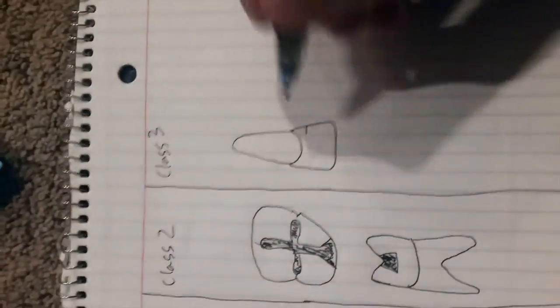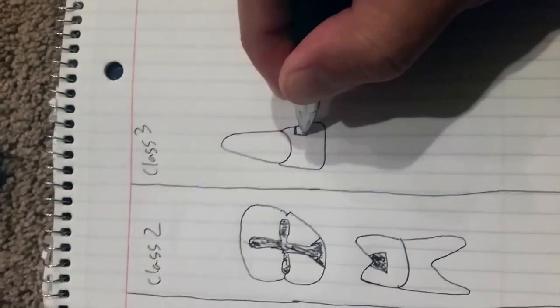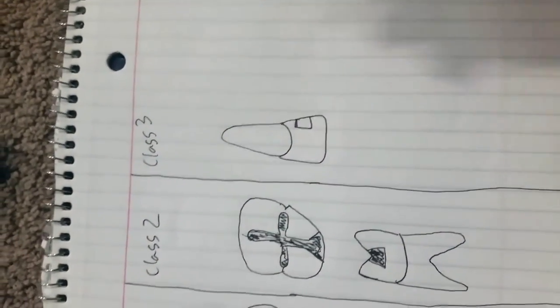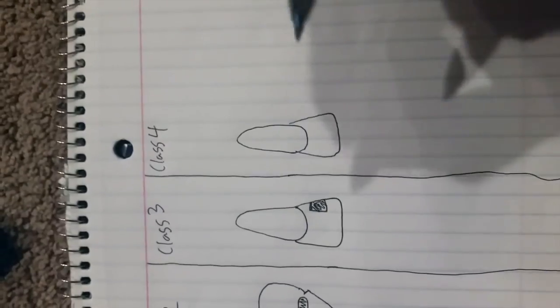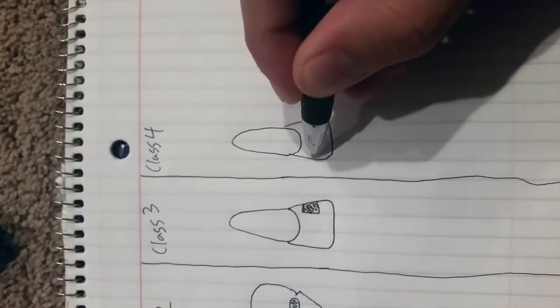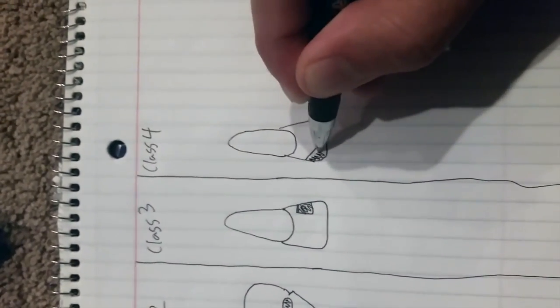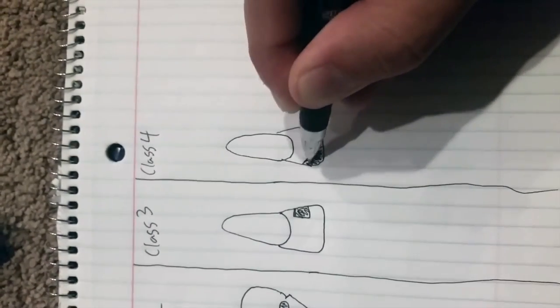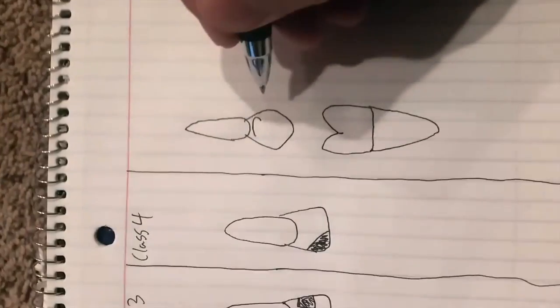So a Class 3 is going to be that interproximal area between your anterior teeth, so like your incisors and your canine. So a Class 4 is similar to a Class 3, except this time it's going to include the incisal edge. So just like the other one, it's the interproximal area on your anterior teeth, but this time it includes the incisal edge.